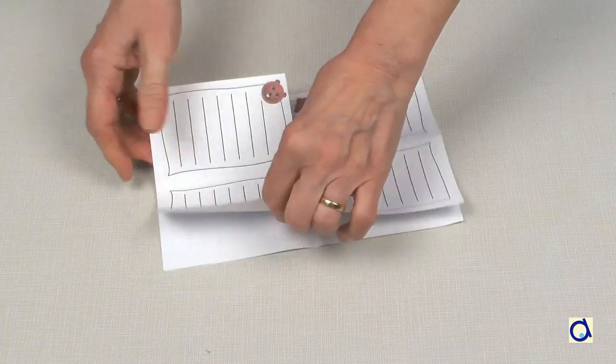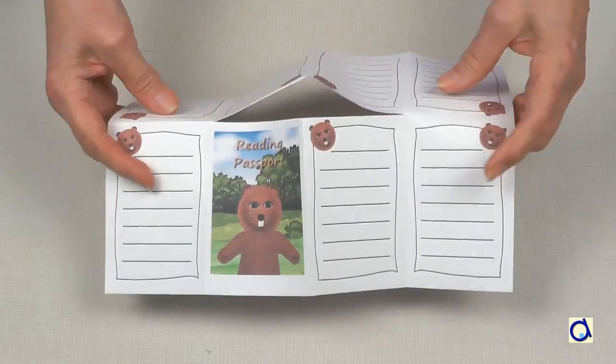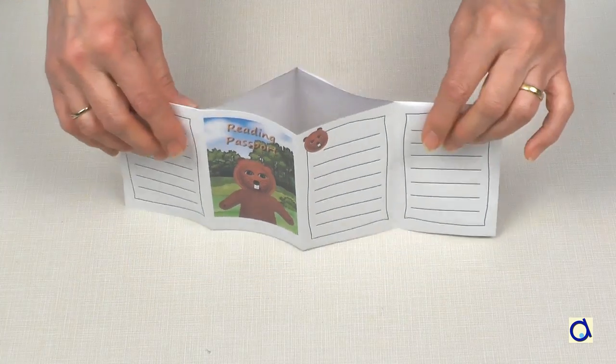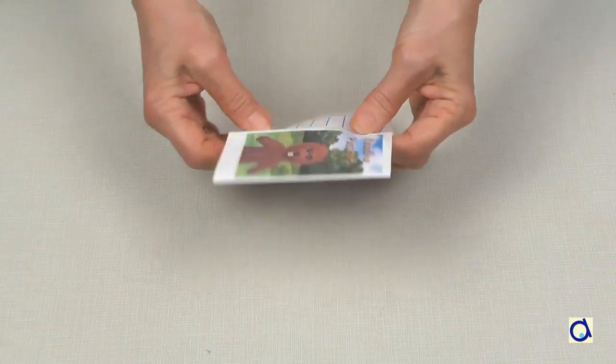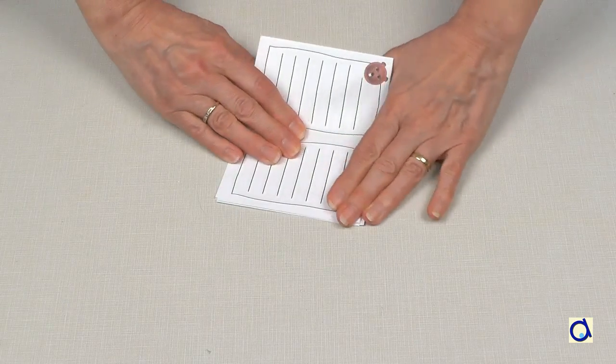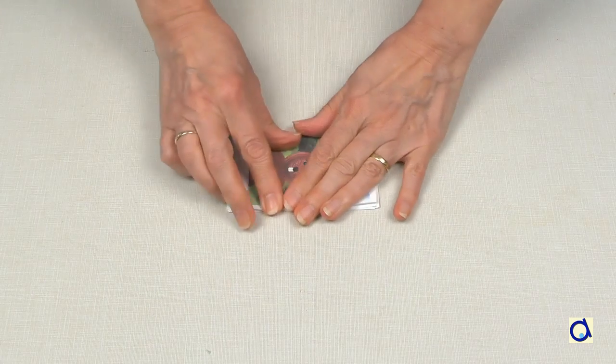Unfold the sheet completely and then fold it lengthwise now. Take one end of the folded sheet in each hand and press them toward each other. The slit you cut opens to form the pages of the booklet.